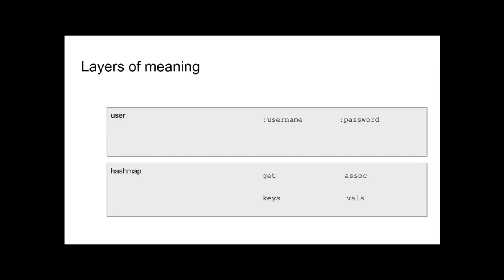In Clojure we play fast and loose and go back and forth between layers a lot, but we can clearly delineate them. The two keywords are actually defined in terms of get — the hash map represents a user creation request and we can operate at that layer of meaning, but it's defined in terms of get. Those keywords have a method in them that makes them act like a function, and that method is defined in terms of get.